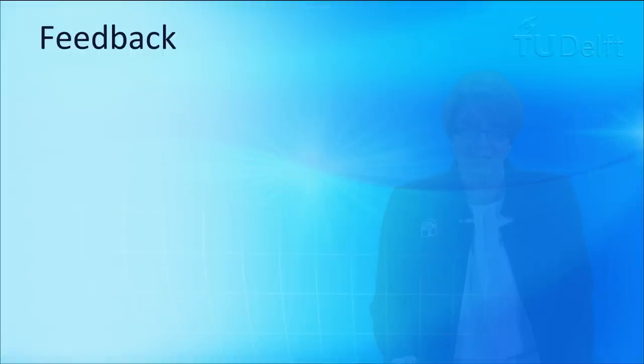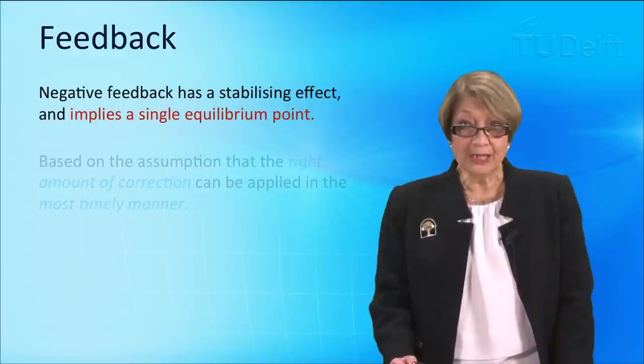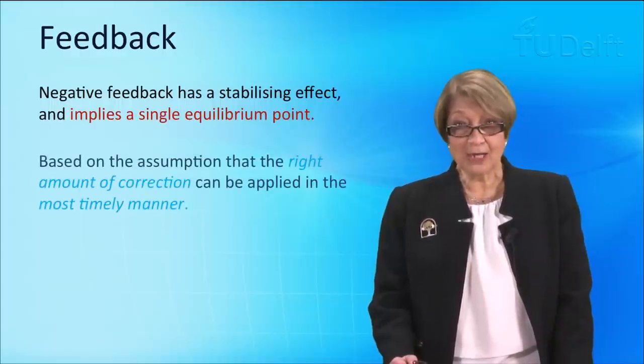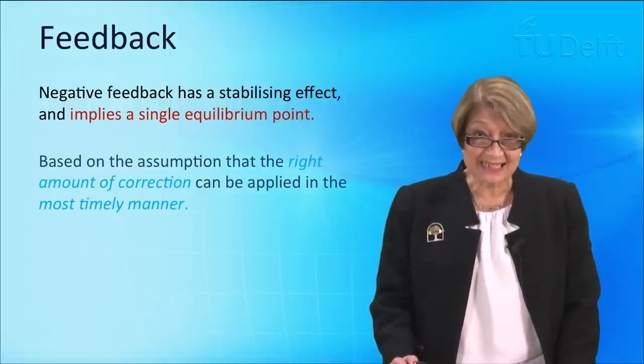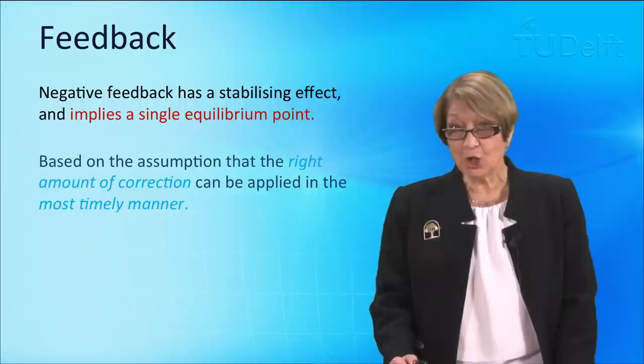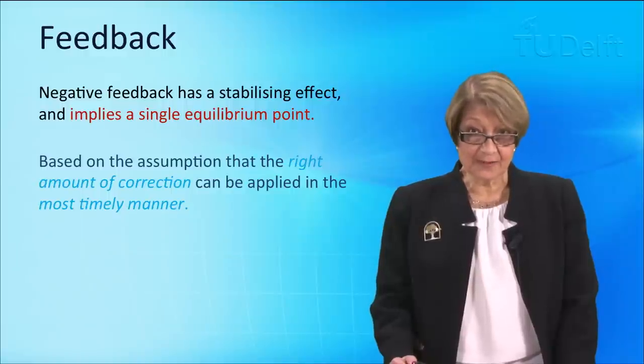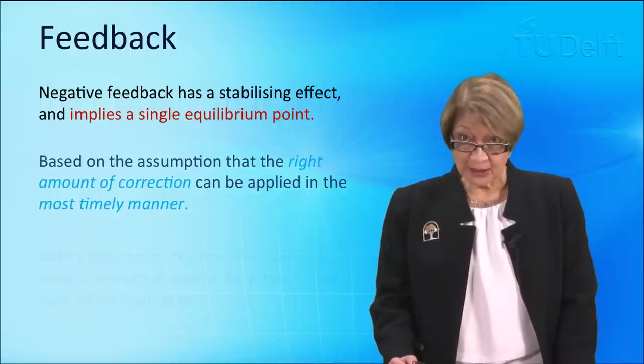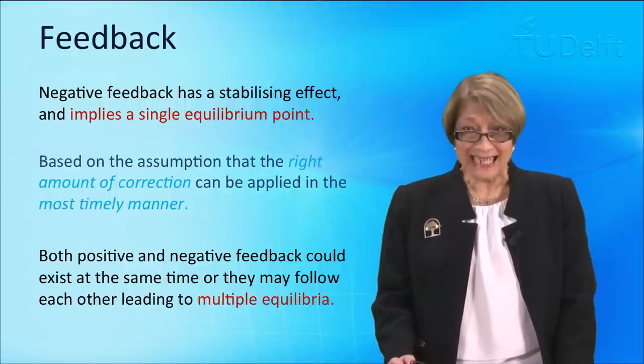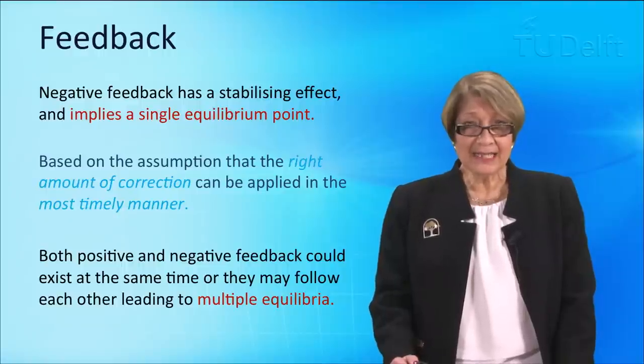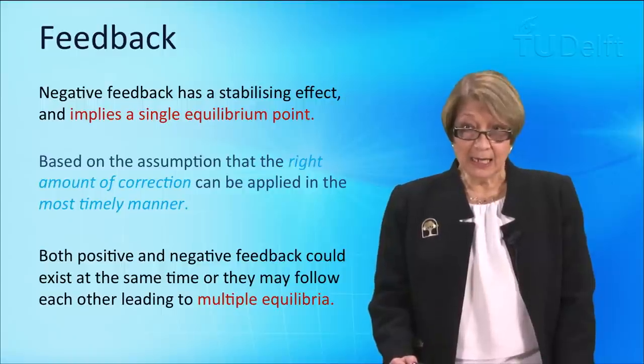Now, what our mistake is, is that very often we actually make the assumption that what applies to a very simple mechanistic system will also apply to a complex system. The assumption there is that the right amount of correction can be applied in the most timely manner and that is not the case. The other assumption is that there is a single equilibrium point. Now, an economy which is a complex system may have both positive and negative feedback at the same time and it will have multiple equilibria, not just a single equilibrium point.